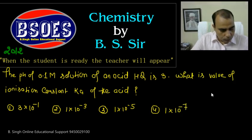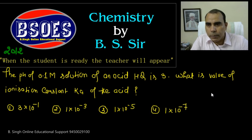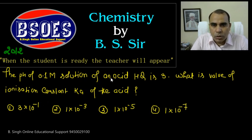The 2012 question is: the pH of 0.1 molar solution of an acid HQ is 3. What is the value of ionization constant Ka for the acid?